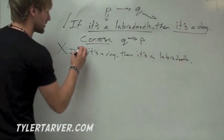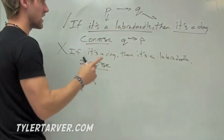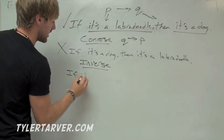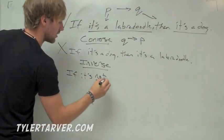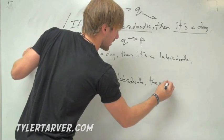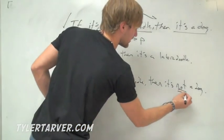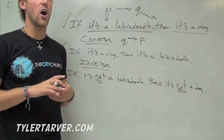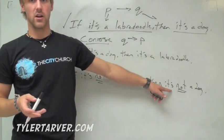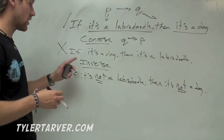The next one is inverse. For converse, we switch those two. For inverse, we leave them where they are and just stick 'not' in front of them. So we say: if it's not a labradoodle, then it's not a dog. Let's look at that statement — if it's not a labradoodle, then it's not a dog. Well, a bulldog is not a labradoodle, but does that mean it's not a dog? No, it's still a dog. So that proves us wrong — our inverse is wrong as well.